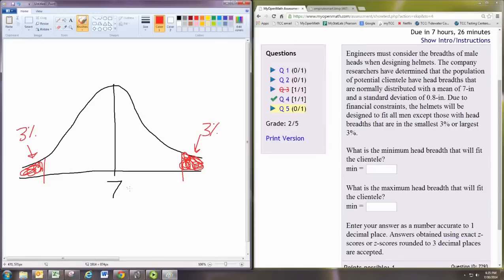Now, most of the calculator and technology functions are going to want to know area to the left. All right, well, that's great for this one, right? Because the area to the left is 0.03. Now, what's the area to the left of the other one? Well, the area to the right is 0.03. So, the area to the left of that one is 0.97, right? 3% to the right, 97% to the left. We're going to use that to find the larger of the two.